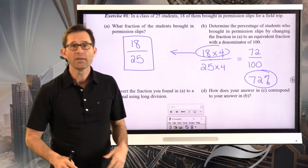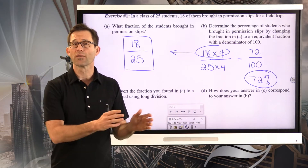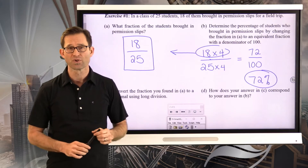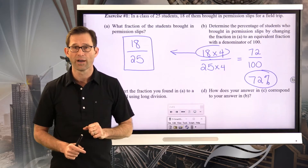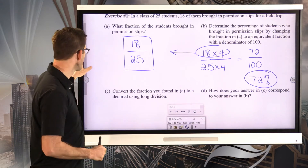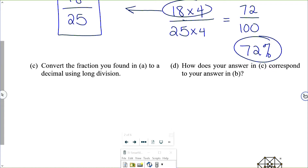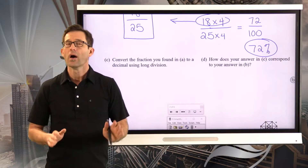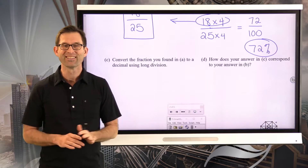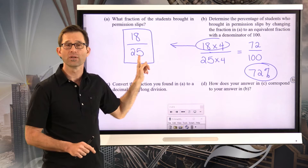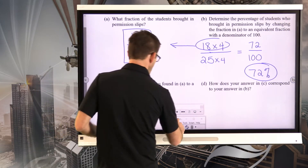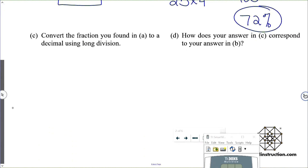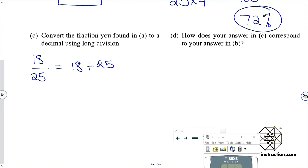If there were 100 students instead of 25 students, 72 of them would have brought in permission slips to maintain that same ratio of 18 to 25. Now let's look at letter C: convert the fraction from A to a decimal using long division. So I want to convert 18 twenty-fifths into a decimal. That's the same as 18 divided by 25.